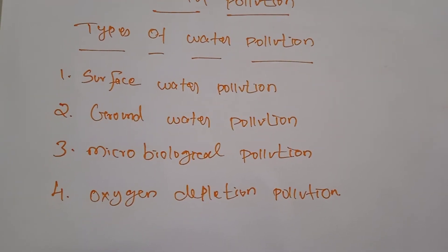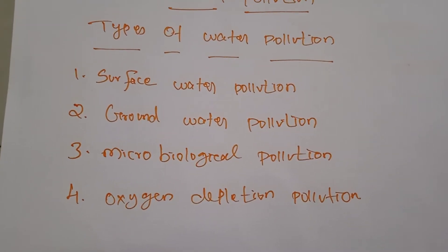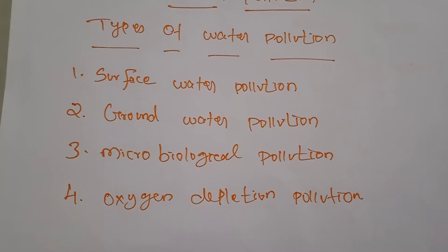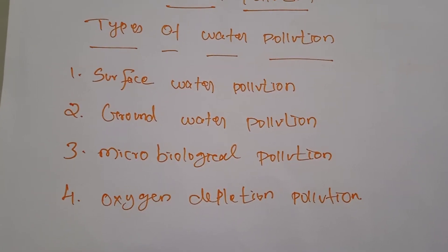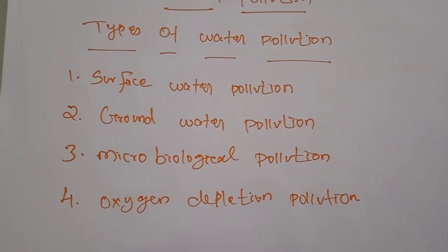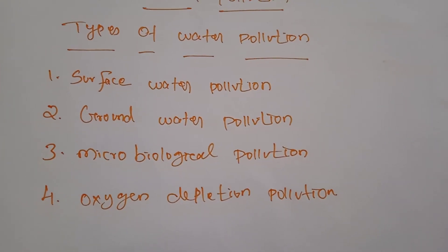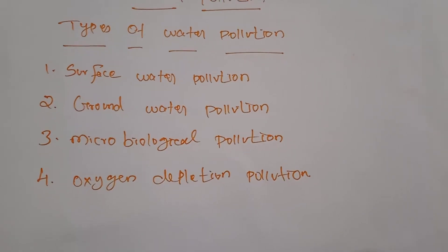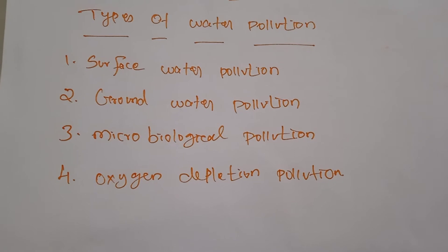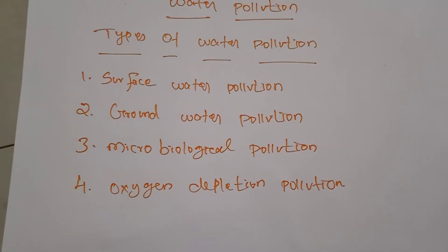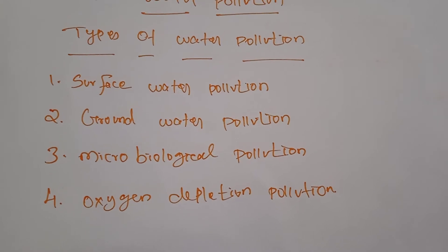Next, oxygen depletion pollution. When oxygen levels in the water are depleted, relatively harmless aerobic microorganisms die and anaerobic microorganisms begin to thrive. If oxygen levels are disrupted by human activities or any other activities, this is also considered a type of water pollution.